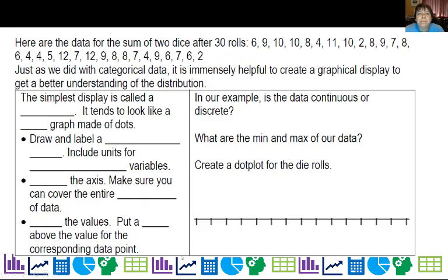So here's some data. We're looking at quantitative data now, and how do we display them? This data is for the sum of two dice after 30 rolls. So we roll two dice and I added them together, got six. I rolled two more, got nine. So you wouldn't get nine from one roll, hopefully that all makes sense.